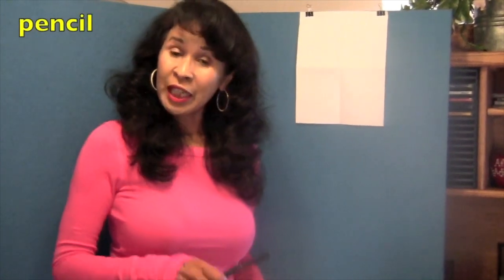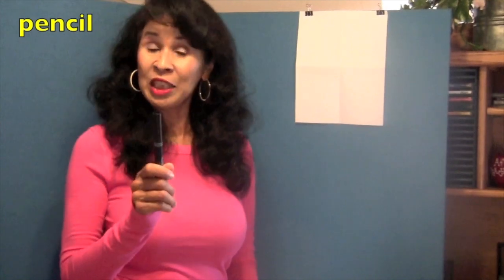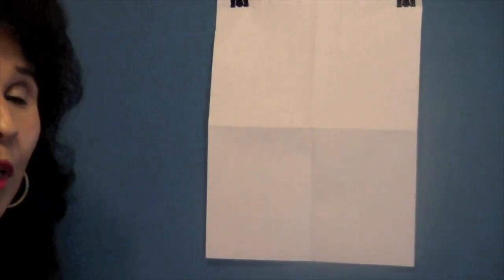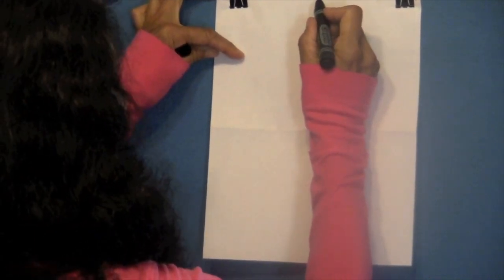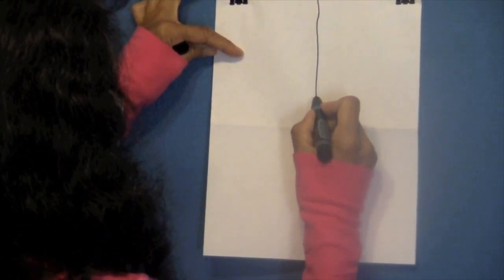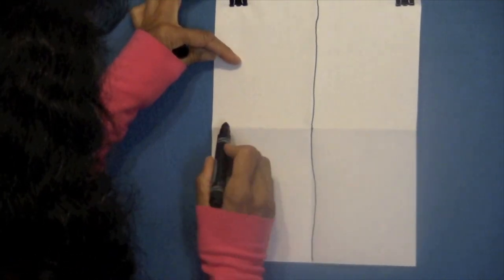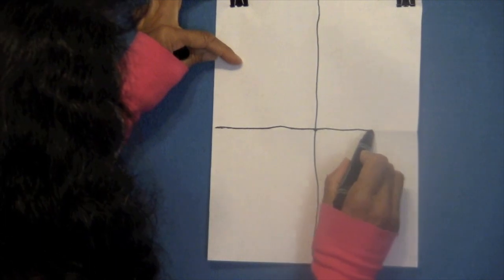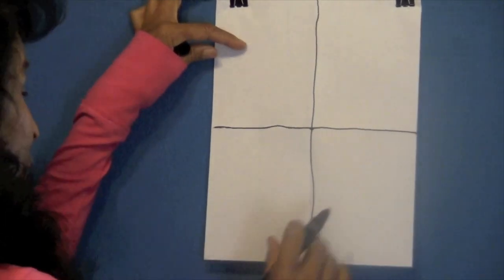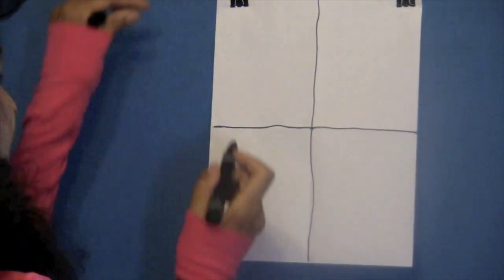Now I need you to get a pencil. I'm going to use a black marker so you can see what I'm doing, but I need you to use a pencil. So, first with your pencil, I want you to draw over those fold lines. It's not easy for me to draw those lines up here. You should be able to do better than me. So we make four boxes.